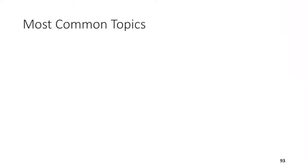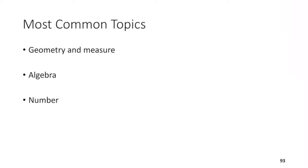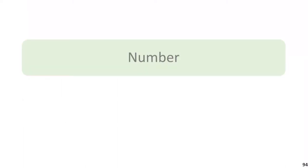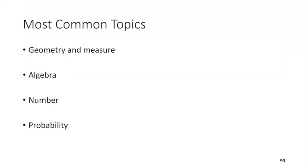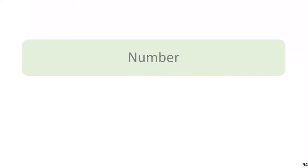Just a bit about the BMAT math section. The topics that come up really commonly are: geometry and measure — mainly bearings and Pythagoras; algebra, which you can expect a lot of in any math test; number, especially standard form and simplifying fractions; and probability, which students sometimes find difficult, but there are a few key formulas to understand. We're going to start with number, as it's the first topic in the specification.